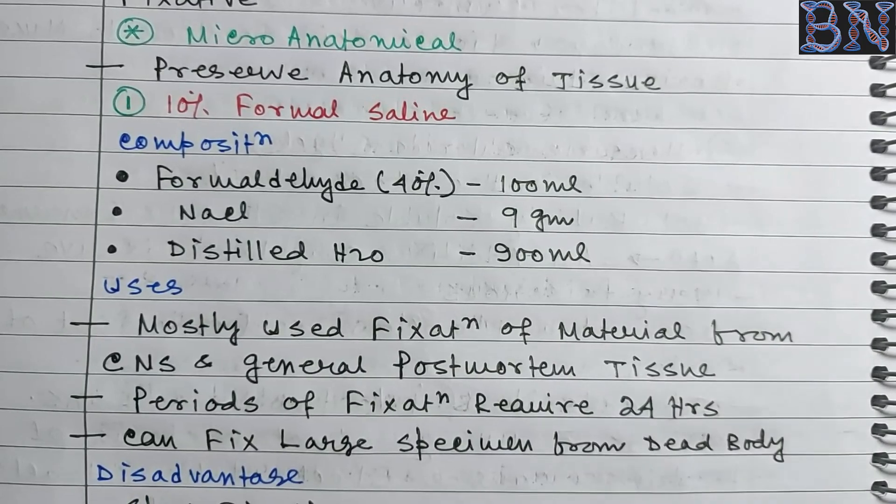Cytoplasmic fixatives preserve the cytoplasmic material of the tissue. The example is Champis fluid (Champy's fluid). It is unstable and should be prepared fresh before use. It preserves mitochondria, fat, yolk, and lipid. Tissues must be washed overnight after fixation. Composition: potassium dichromate 7 ml, chromic acid 7 ml, and osmium tetroxide 4 ml.